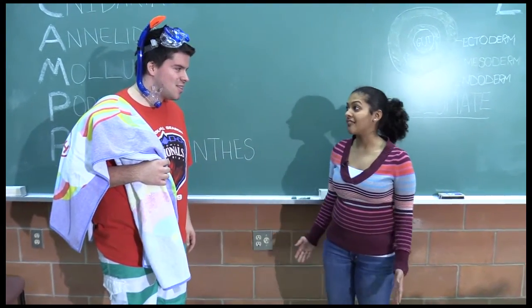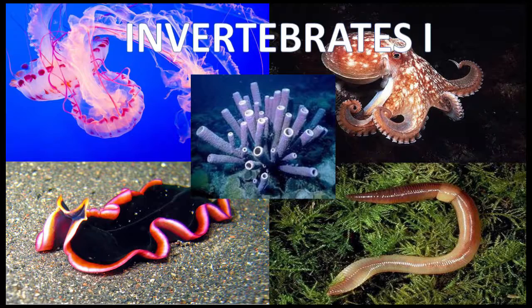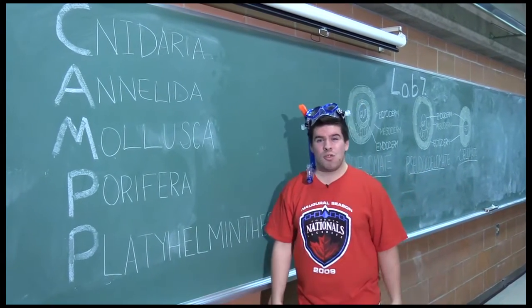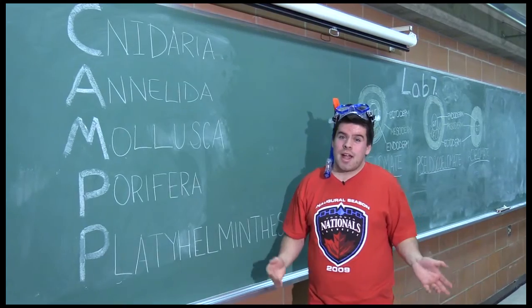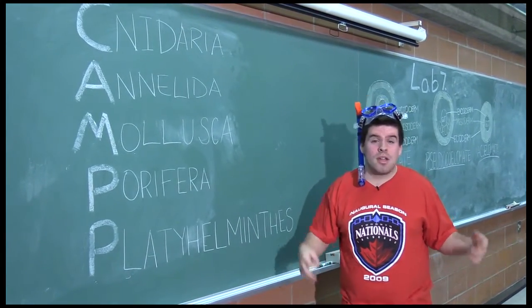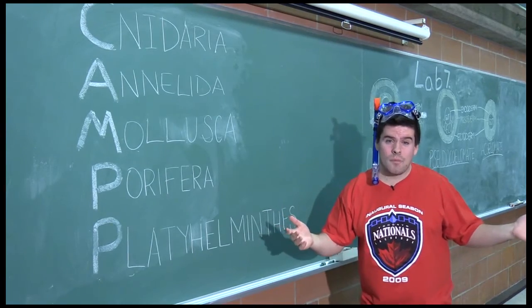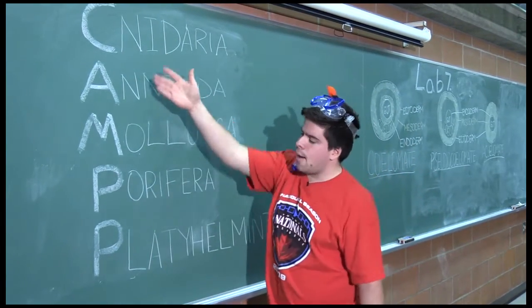Well, today we're going to do Lab 7: Invertebrates, or simple animals. In Lab 7 we'll be learning about 5 phyla. Do you remember as a kid going to camp and singing songs like '99 Bottles of Beer on the Wall'? Well, in order to remember the 5 phyla in Lab 7, I remember CAMP.